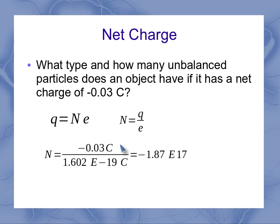When I plug my values in here for both my charge, net charge of my object, and the fundamental charge, what I find is that N is minus 1.87 times 10 to the 17th. Now what does that really mean? That means I have 187 quadrillion electrons. I know that they're electrons because it's negative. And so I've got a lot of extra electrons on this object. And yeah, quadrillion is a lot.